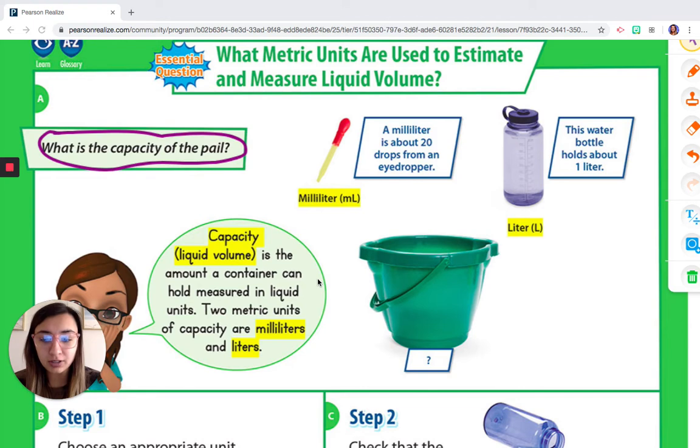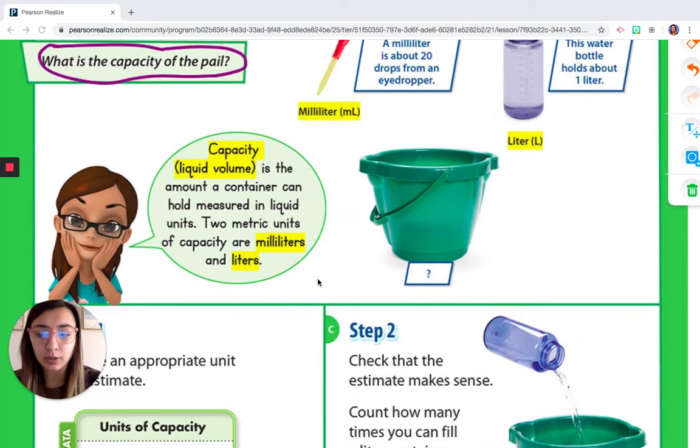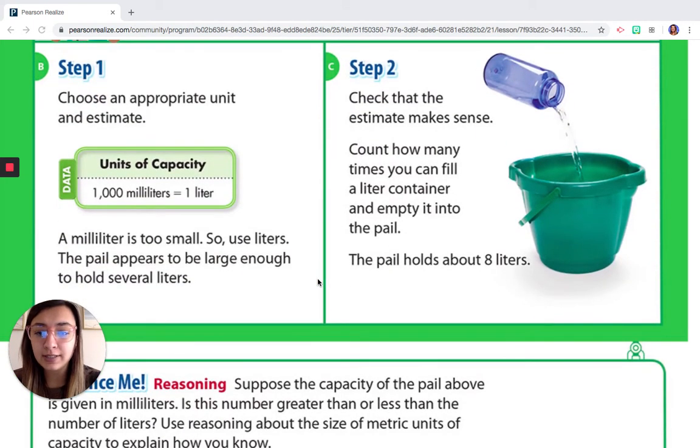So first of all, we're going to scroll down here. Our first step, you can see here step one, we need to choose an appropriate unit and estimate. So like we said, and what we can see here, a thousand milliliters is one liter.